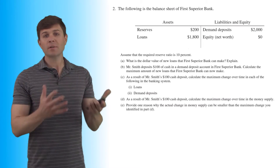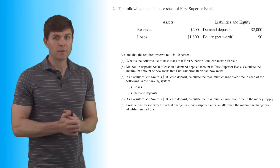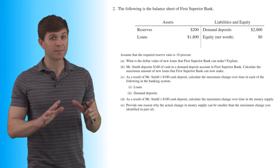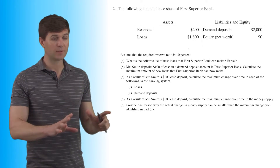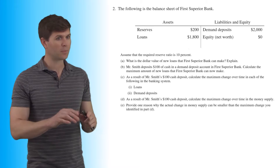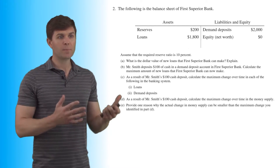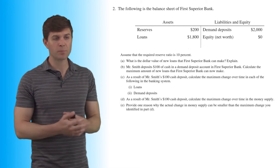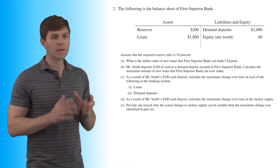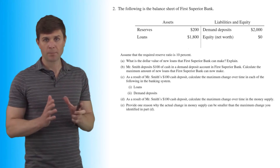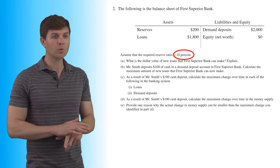It starts off by giving us a balance sheet from First Superior Bank. It gives us reserves — not labeled as excess or required, simply stated as reserves. It's important to note that distinction. We assume the required reserve is 10%, which is a very important thing to note.